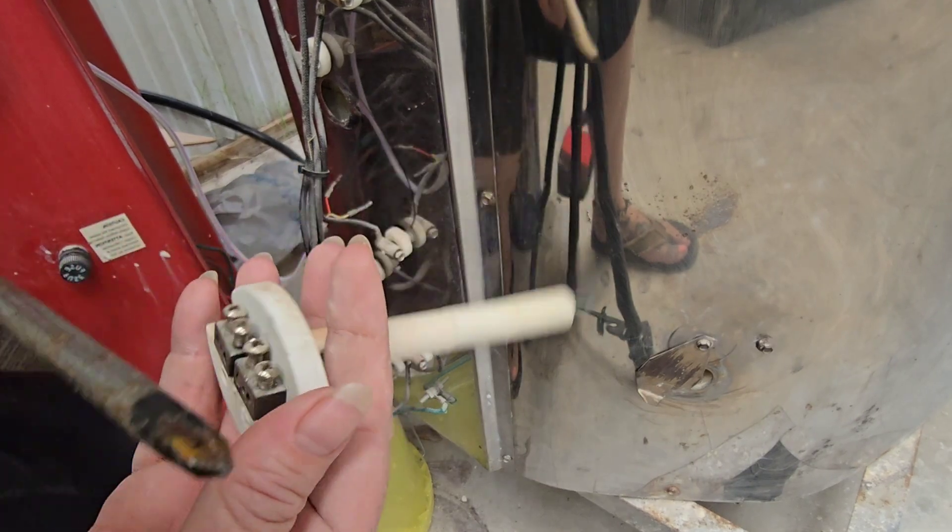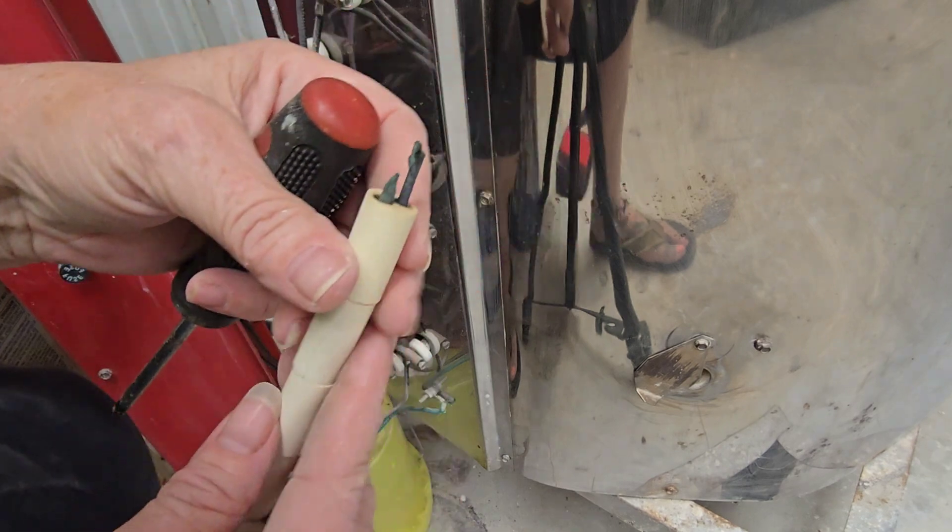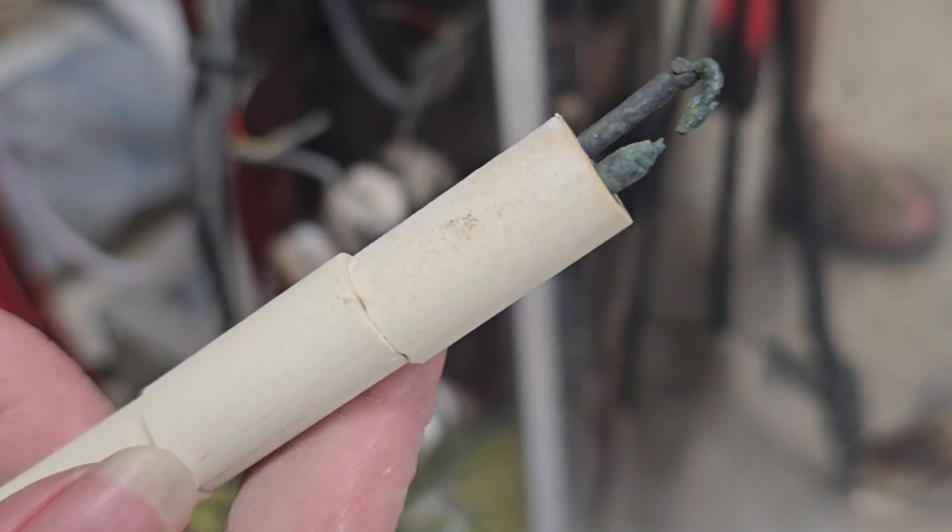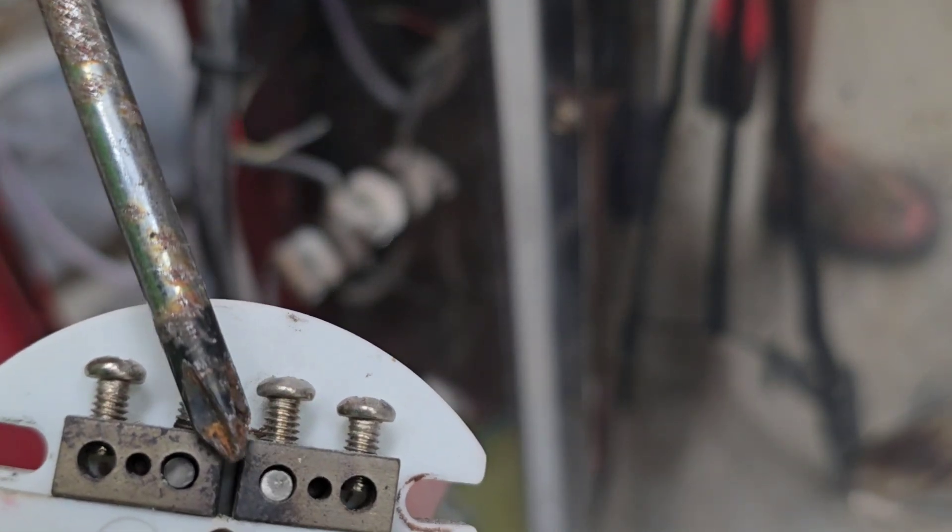So after getting the right size screwdriver for the job, let's see if we can zoom in a little bit. What we're going to do is you can see where it's put in here and here. So we're just going to loosen these. We're not going to take them off. And then this will slide directly out.